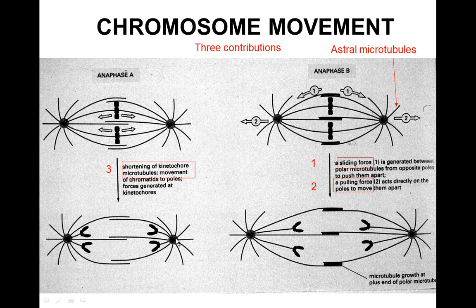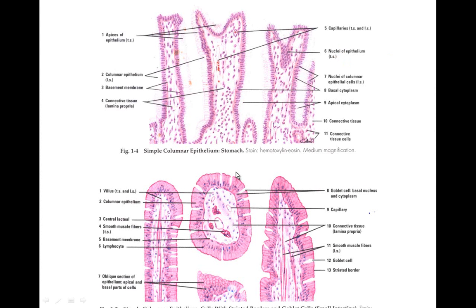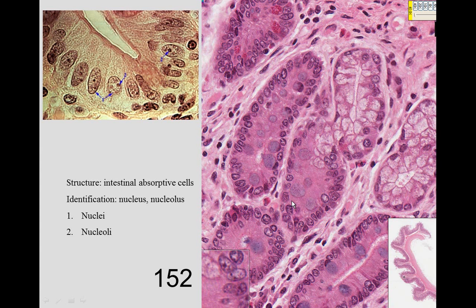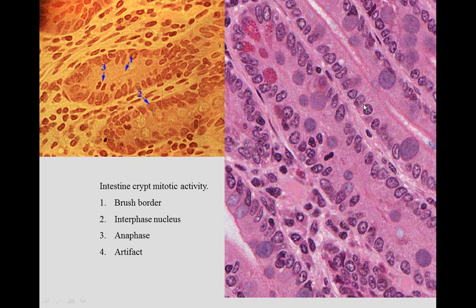Whenever the kinetochore microtubules shorten they pull the chromosomes to the side. Here we see the atlas view of intestinal absorptive cells - simple columnar epithelial cells with brush borders. Today we are going to look at the nucleus inside. In slide 152 we see the nuclei of these different cells, and sometimes you can see the nucleoli as well. We see intestinal absorptive cells, goblet cells, and Paneth cells at the very bottom. We can see interphase nuclei but also metaphase plates, which is an indication of cell division occurring.